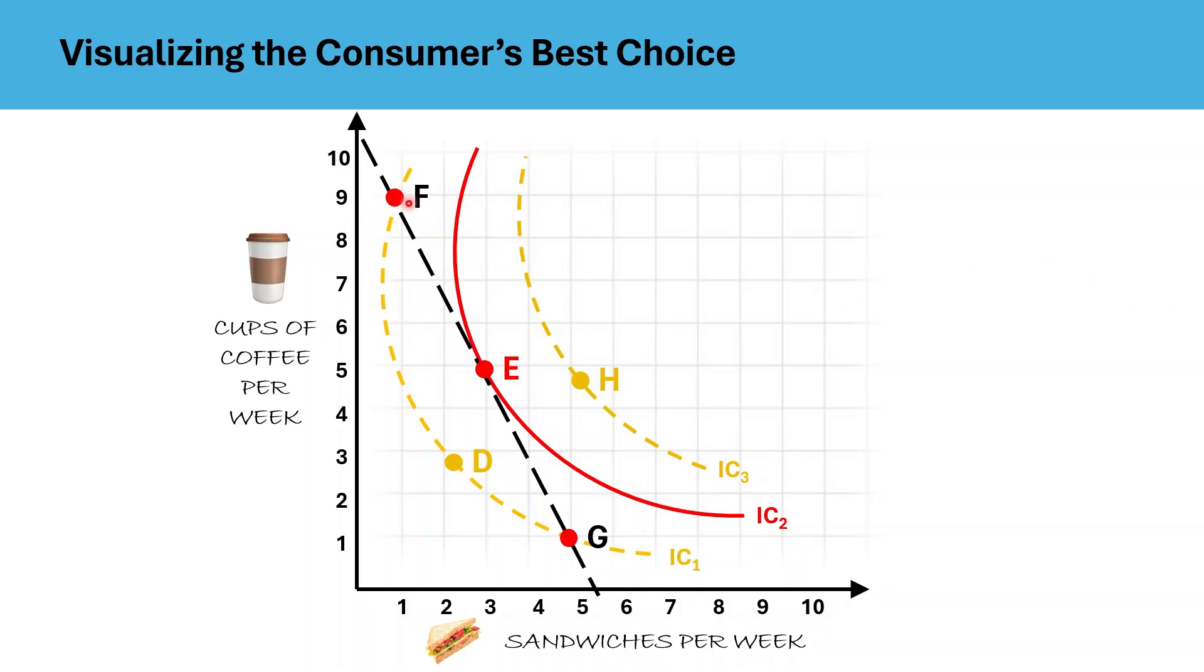Now, let's look at points F and G, which are on the budget line. But the problem is, they also lie on the lower indifference curve, IC1, which gives a lower utility than point E, which is on a higher indifference curve, IC2.